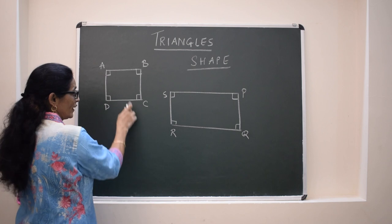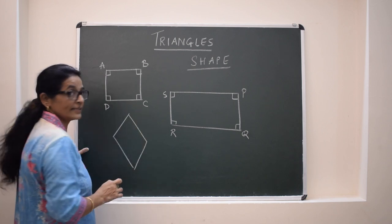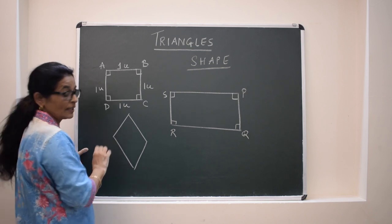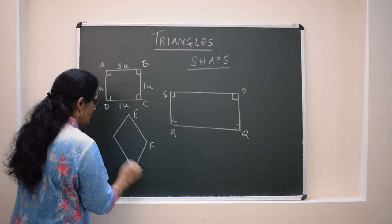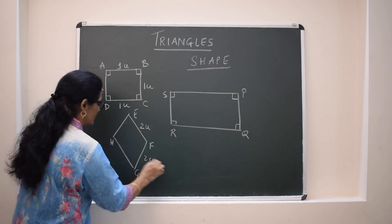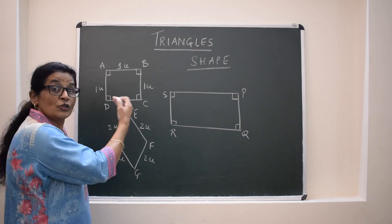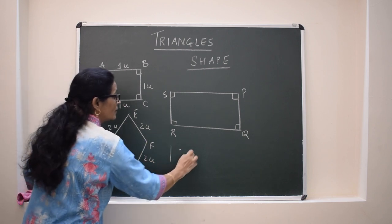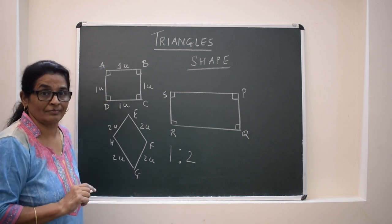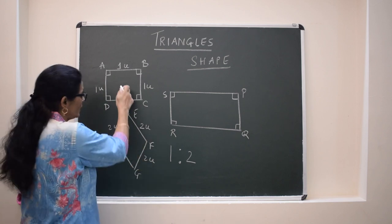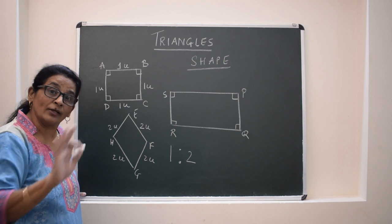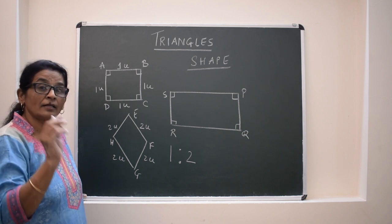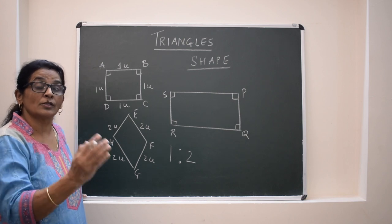If I take a square ABCD with sides of one unit, and another square EFGH with sides of two units, the ratio of corresponding sides is 1:2. But will they be similar? No. So only angles alone will not work, and only the ratio of corresponding sides being equal will also not work. For polygons with more than three sides, angles should be equal AND the corresponding sides should be in the same ratio — then only the polygons will be similar.